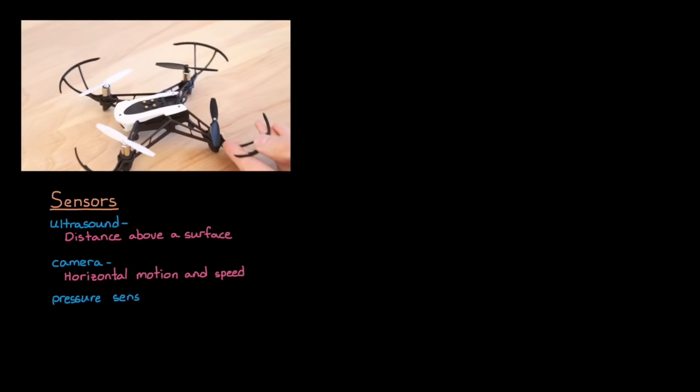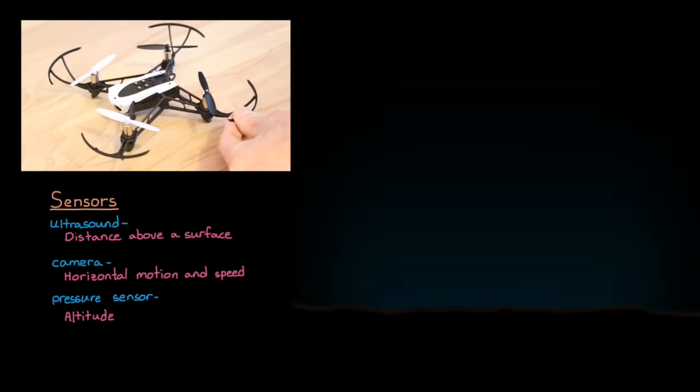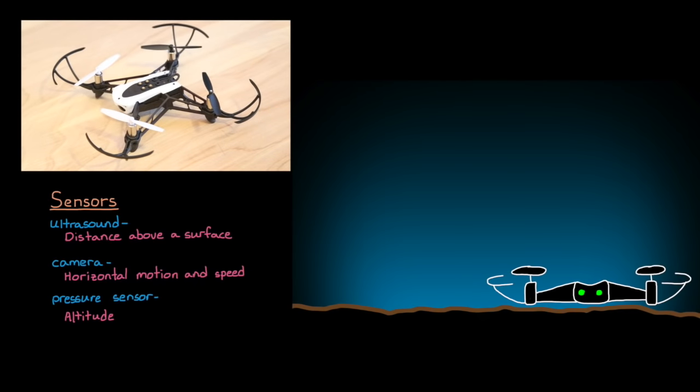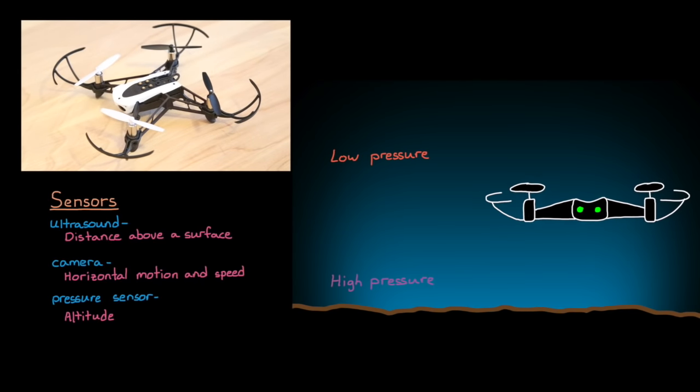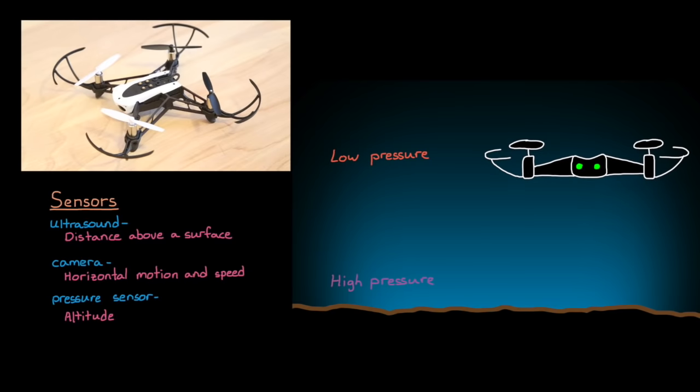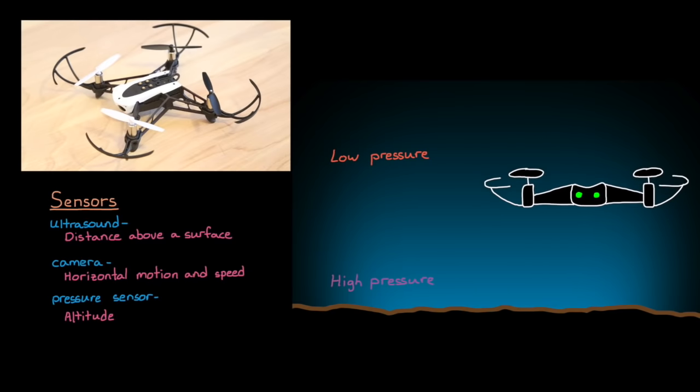Inside the mini drone there is a pressure sensor, which is indirectly measuring altitude. As the drone climbs in altitude, the air pressure drops slightly, and we can use this slight change in pressure to estimate how the altitude of the mini drone is changing. Is it going up or down?